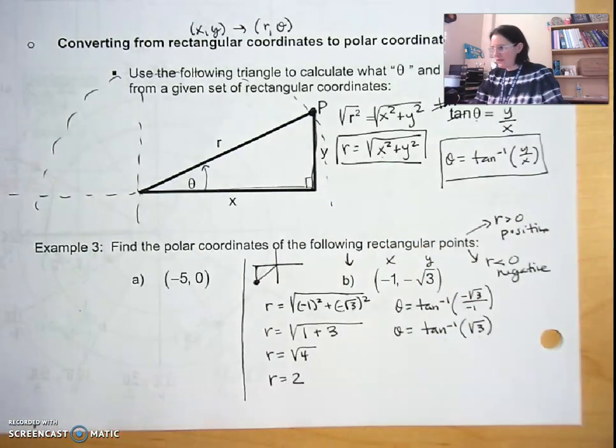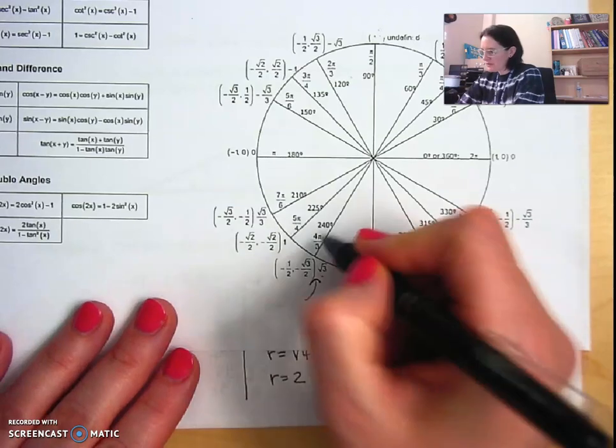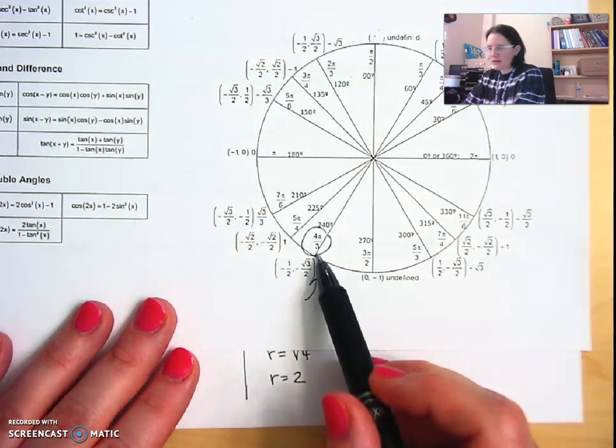So that tells me that the theta I need is this one in this quadrant: four pi over three.